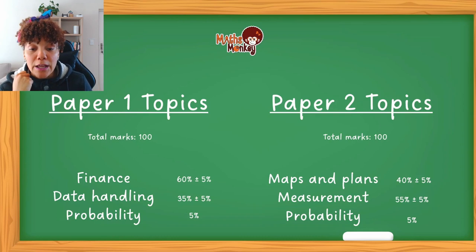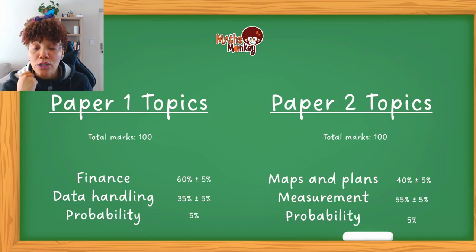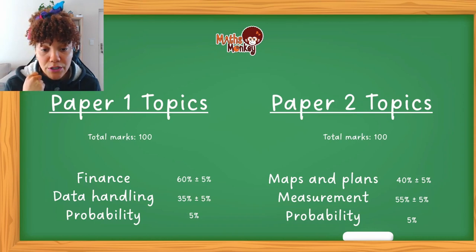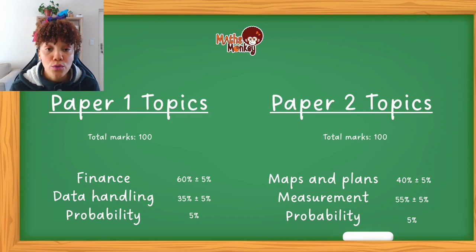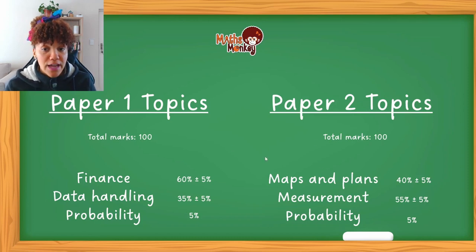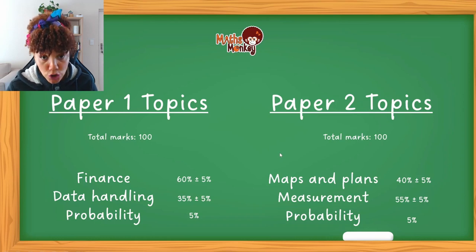Majority of the marks in Paper One goes to finance, so majority of your study time for maths literacy must go to finance. I always tell my students: whatever section counts the most marks, do the most preparation for those sections so that you can make sure you score all the marks for those sections. That's basically what's going to be covered in Paper One and Paper Two.